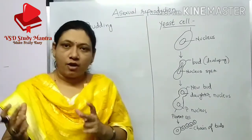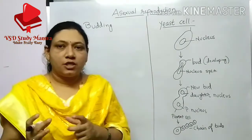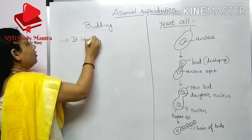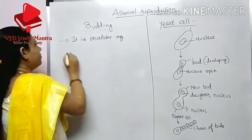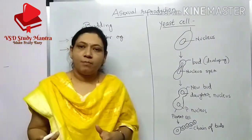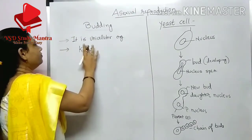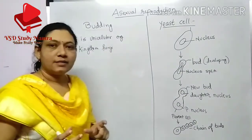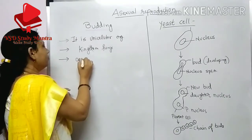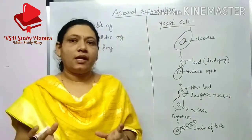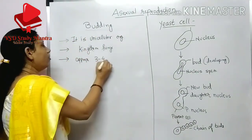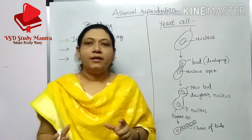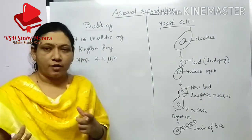First, the yeast cell is a unicellular organism, though most species of yeast can also be multicellular. Second, it belongs to the kingdom Fungi. Third, the approximate size of the yeast cell is 3 to 4 micrometers, though it varies across different species.